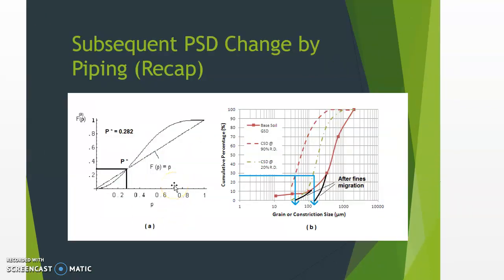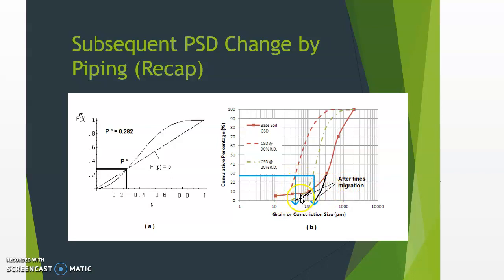As explained in the previous video clips, we calculate the constriction size distribution from the grain size distribution using the re-normalization method. From this we estimate that 28% is the critical matching point — particles below that range will pass through via piping, while larger particles above that critical size will remain. After piping, the grain size distribution of the graded soil changes, as shown by the black line.